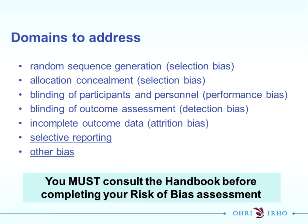The domains to address are: random sequence generation, allocation concealment, blinding of participants and personnel - which has recently been split to categorise by bias type, specifically performance and detection bias - blinding of outcome assessments, incomplete outcome data which is attrition bias, selective reporting, and other biases. I underline selective reporting and other biases - we'll touch on these briefly today but won't go into detail. They can be quite challenging to assess, so please consult the handbook for more explicit guidance.